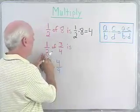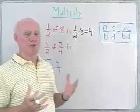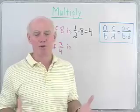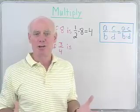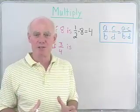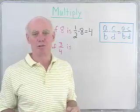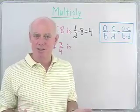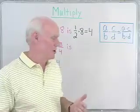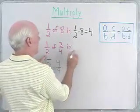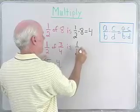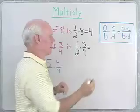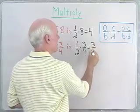What if I have 1 half of 3 fourths? For instance, if you were doing some cooking and you had a recipe that called for 3 fourths of a cup of sugar, and you were only going to make half the recipe, how much sugar would you use? Intuitively we know that the answer is going to be 3 eighths. Half of 3 fourths is going to be 3 eighths, so mathematically we write this as 1 half times 3 fourths, and intuitively we know that the answer is 3 eighths.